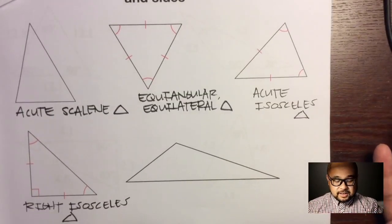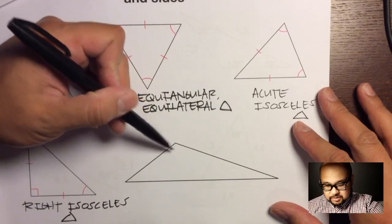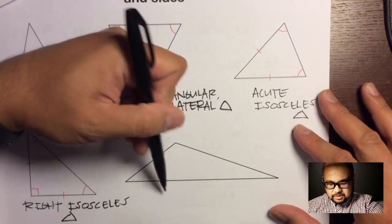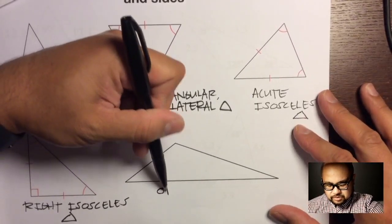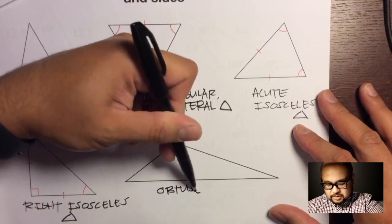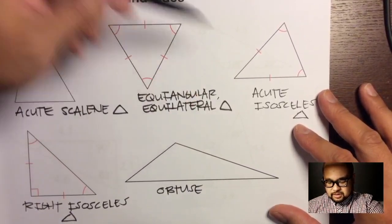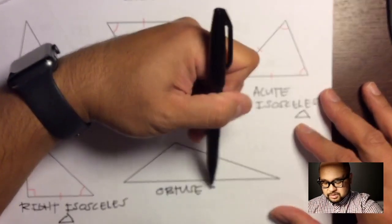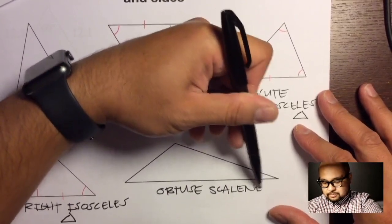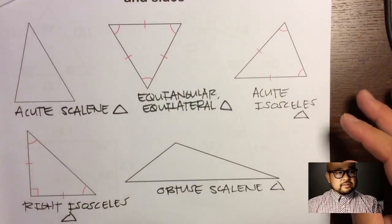For the last triangle on this page, look at this angle — it's pretty wide, so this is an obtuse triangle. There are no tick marks on any sides, so this would be scalene. This is an obtuse scalene triangle.